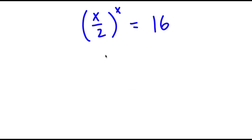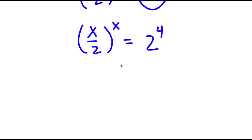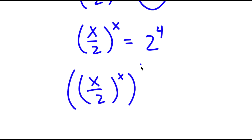In this problem, I have x over 2 to the power of x is equal to 16. To solve this, I'm going to first start by rewriting 16 as 2 to the power of 4. So now I have x over 2 to the power of x is equal to 2 to the power of 4. Now I'm going to take the power of 1 half on both sides. So now I have x over 2 to the power of x, to the power of 1 half, is equal to 2 to the power of 4 to the power of 1 half.